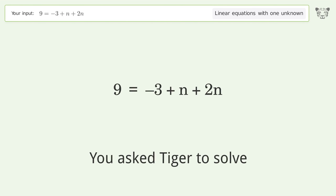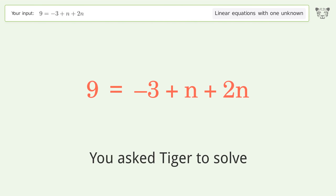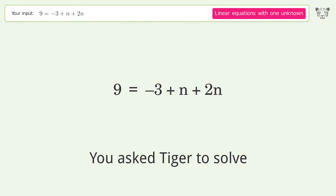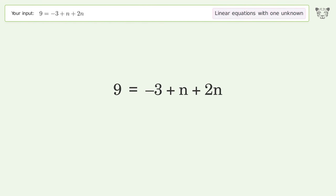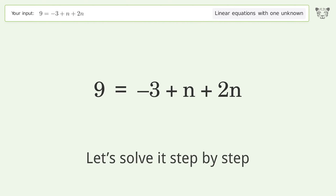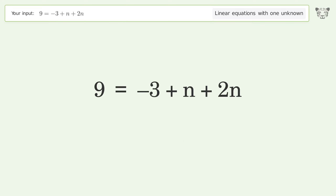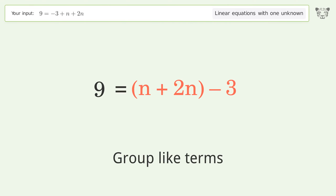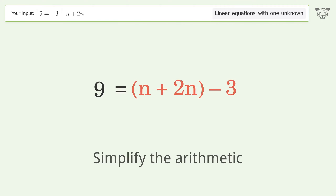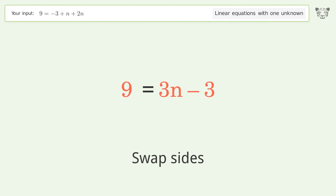Ask Tiger to solve this — it deals with linear equations with one unknown. The final result is n equals four. Let's solve it step by step: simplify the expression, group like terms, simplify the arithmetic, swap sides.